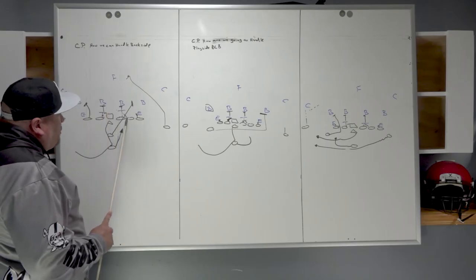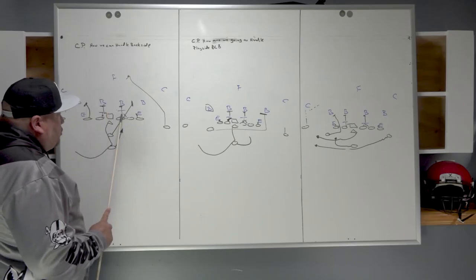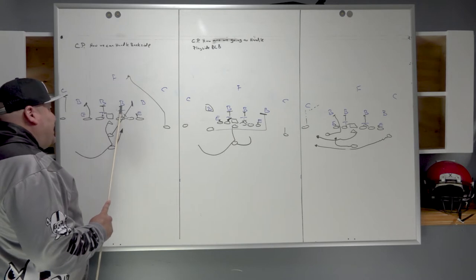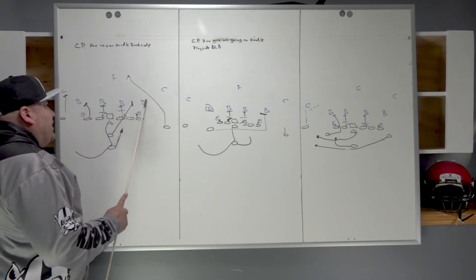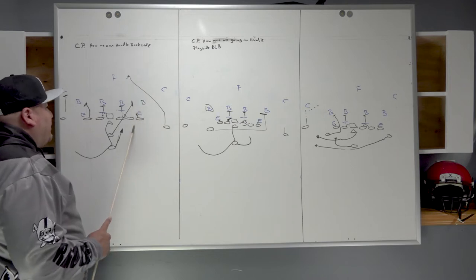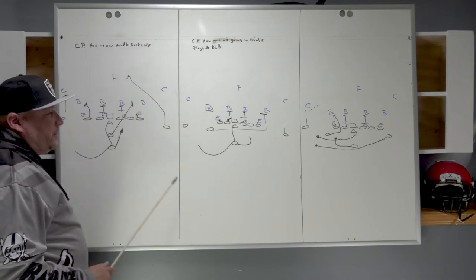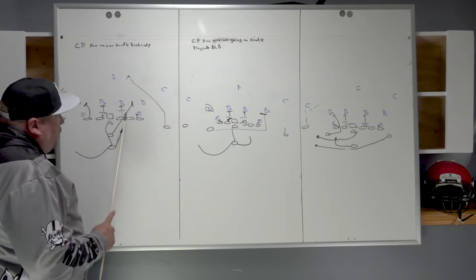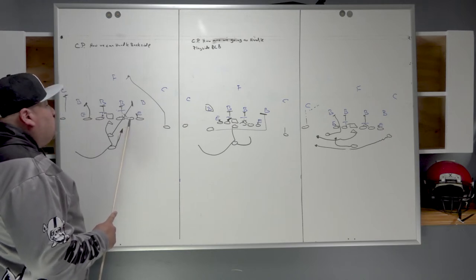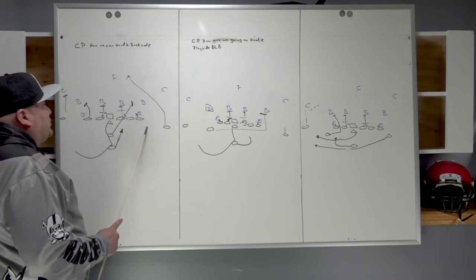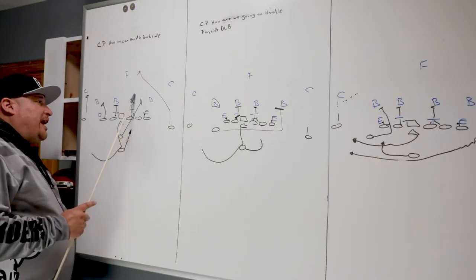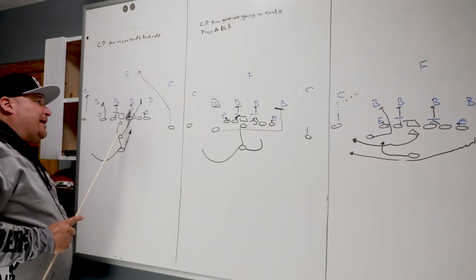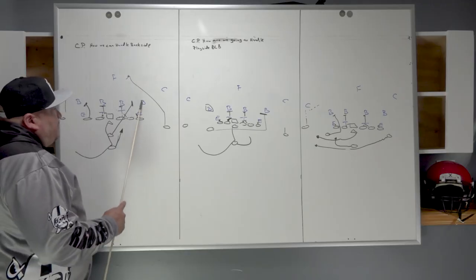Left guard and center will double team the one technique into the lap of the left side inside linebacker. The right guard and right tackle will double team the three technique to the lap of the play-side inside linebacker. We will isolate the outside play-side linebacker — my theory is running at the double teams, we want to hug the power block in a double team, which is coming from the right tackle. So we're going to isolate the play-side outside linebacker and stuff the ball inside the B-gap.